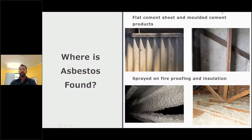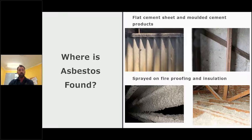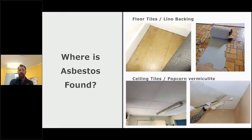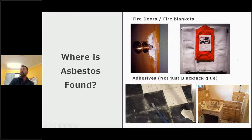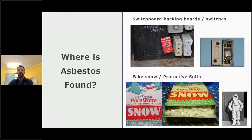Where is asbestos found? We've come across flat cement sheet and moulded cement products, which most people have seen. There's also sprayed-on fireproofing and insulation, floor tiles and lino backing, ceiling tiles that are popcorn or vermiculite. Window putties, mastics and joints. Roof shingles and corrugated roofing. Fire doors and fire blankets. Adhesives — a lot of people think it's always in the blackjack glue but it can be any adhesive. Switchboards and switches.